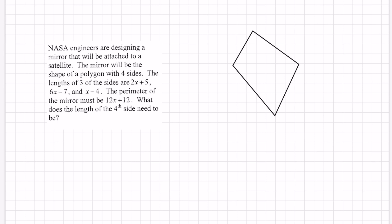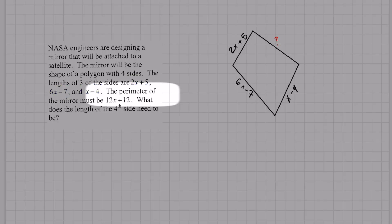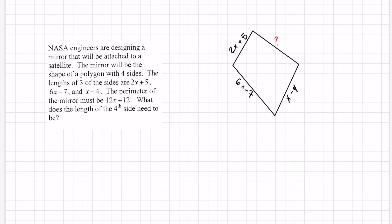The lengths of three of the sides, so we're given three lengths: 2x + 5, 6x - 7, doesn't matter what order you do this in, x - 4, and we are missing one of them. And once again they give you a perimeter. The perimeter of the mirror must be 12x + 12. In order to find the perimeter of a polygon I just have to add up all the sides. So let's call this 1, 2, 3, and the missing one 4. The perimeter is just adding up 1, 2, 3, and 4.